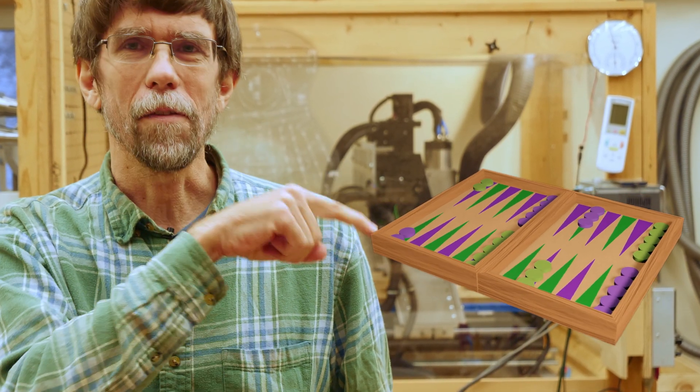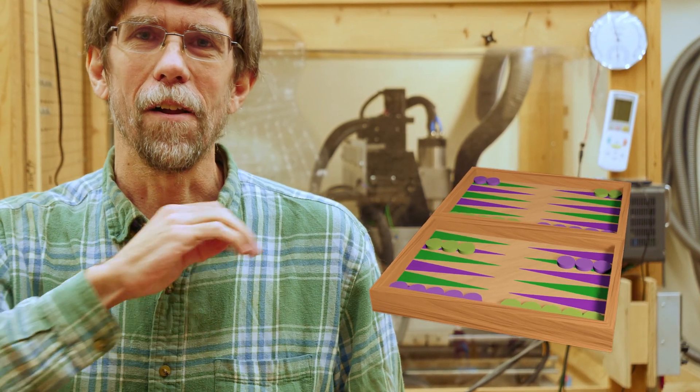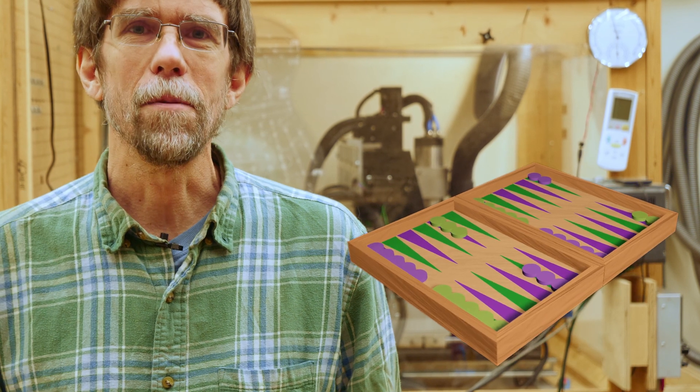And then on the inside it's going to be a backgammon board. So on the inside they requested this purple and green color scheme. I'm going to use the CNC router to cut the points of the backgammon board in the game surface. I'm going to route a channel and then fill that in with colored epoxy.